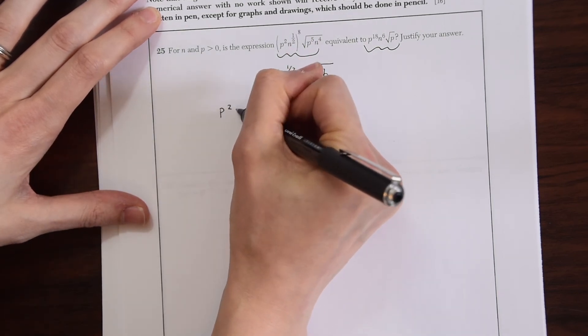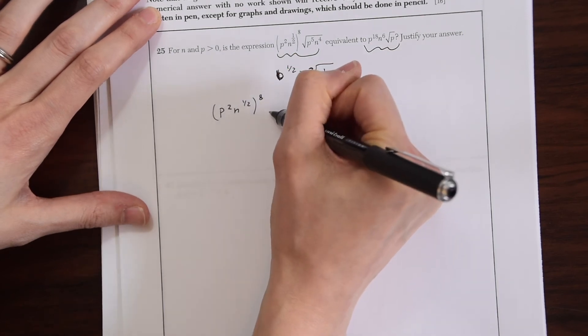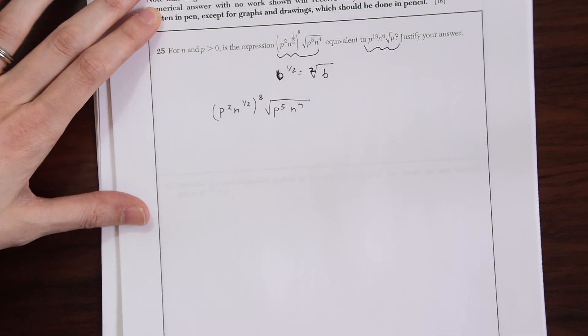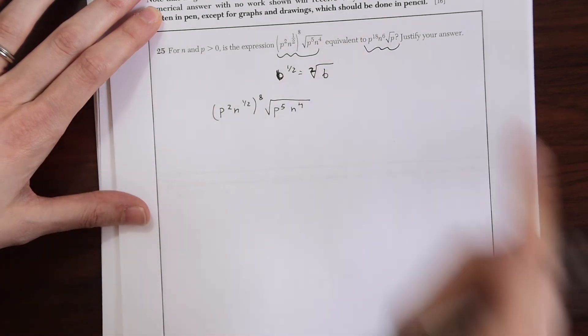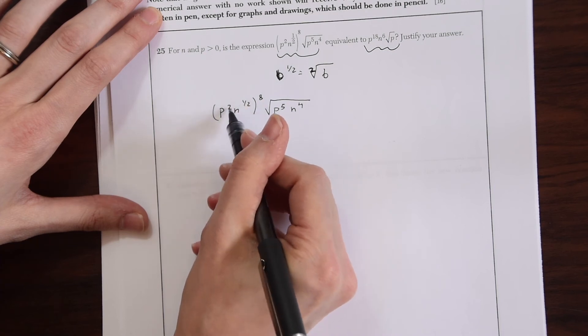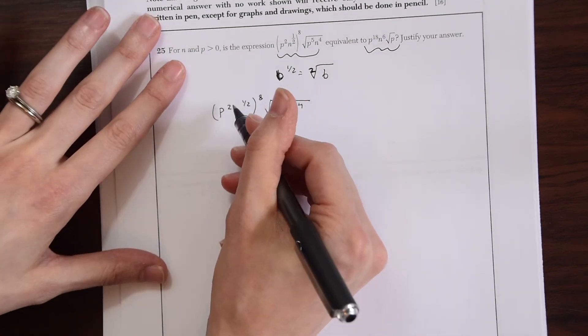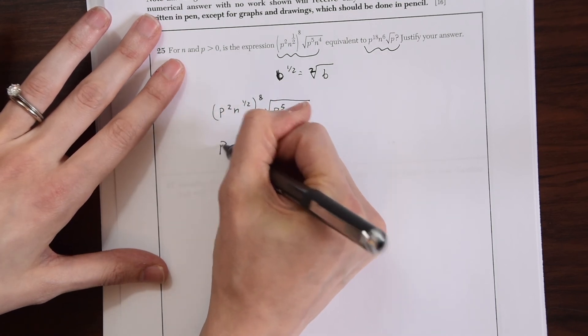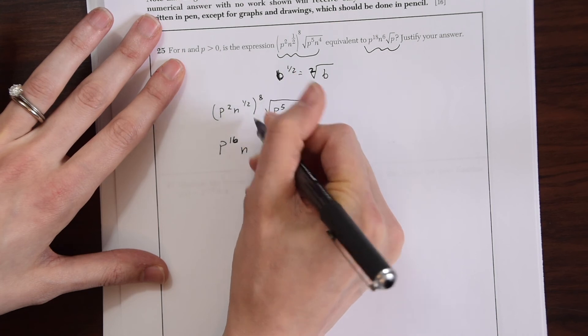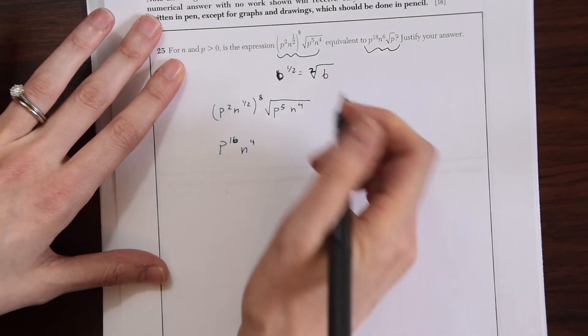We have p squared n to the one half. Let's simplify this and try to get it in this format here. The first thing we're going to do is multiply the exponents. Whenever exponents are in parentheses like this we always multiply them together. So this becomes p to the 16th n to the fourth because one half times eight will give you four.